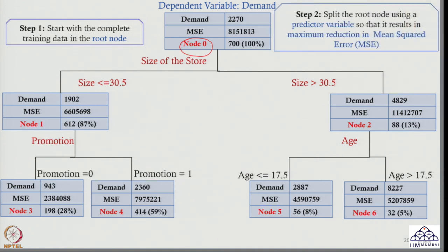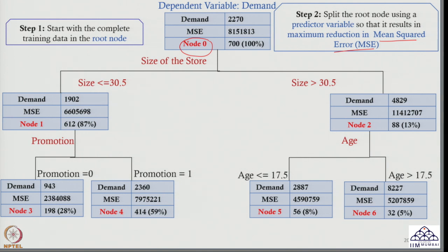The next step, which is very crucial: split the root node using a predictor variable — also called an independent variable — so that it results in maximum reduction in mean squared error. If you remember the classification tree, in that case we split the node to achieve maximum reduction in impurity. So in place of MSE we used impurity — Gini index or entropy. In this case, since our dependent variable is continuous, we cannot use Gini index or entropy; we use mean squared error.